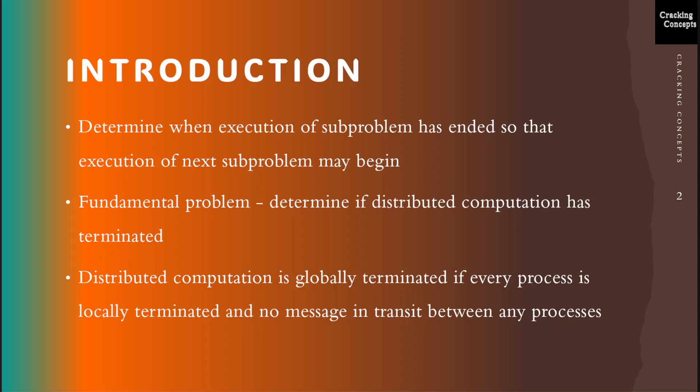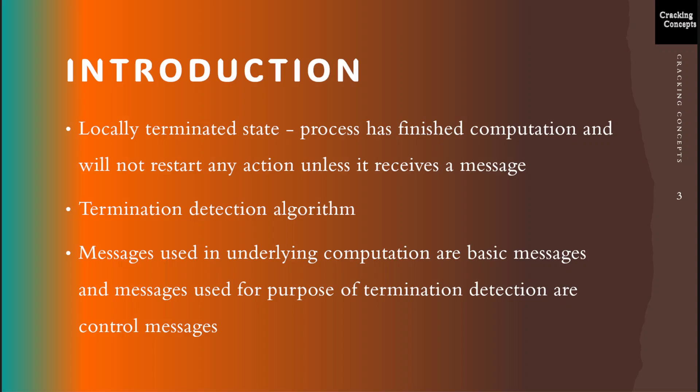This is a non-trivial task since no process has complete knowledge of the global state and global time does not exist. A distributed computation is globally terminated if every process is locally terminated and there is no message in transit between any processes. A locally terminated state is a state in which a process has finished its computation and will not restart any action unless it receives a message. In the termination detection problem, a particular process or all of the processes must infer when the underlying computation has terminated. A termination detection algorithm is used for this purpose.